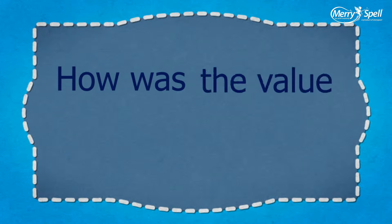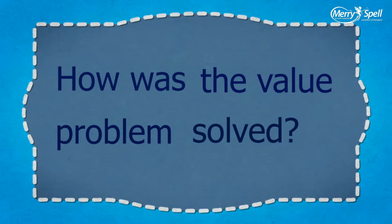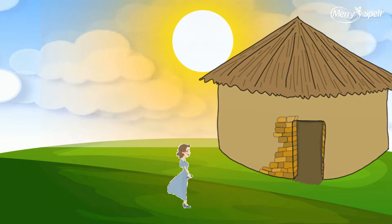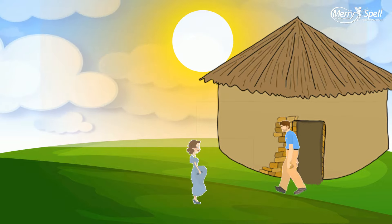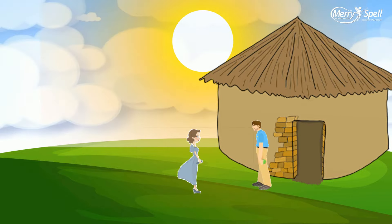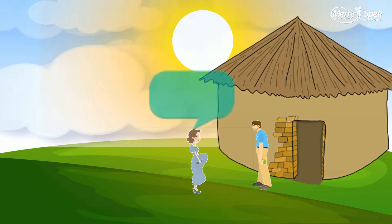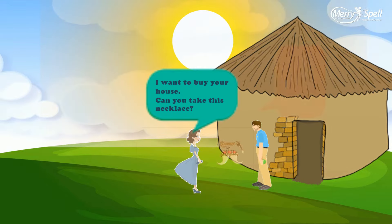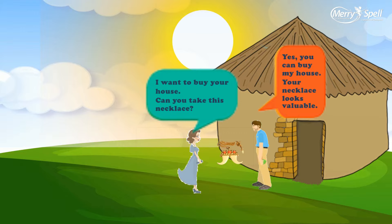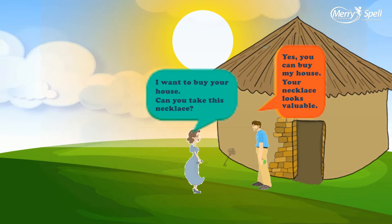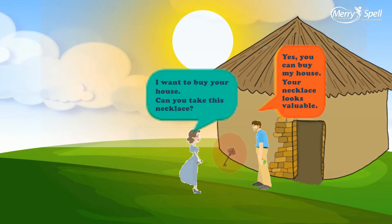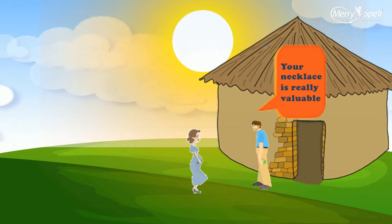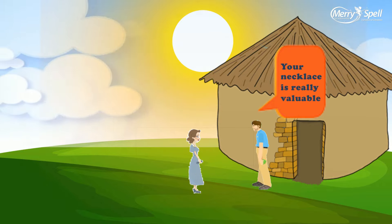How was the value problem solved? The value problem was solved by creating an imaginary value, which can be compared and exchanged with any item for the purpose of trade. Earlier, people used animal skin, jewelry made out of rocks, animal bones marked with signs, and weapons to be exchanged as currency.